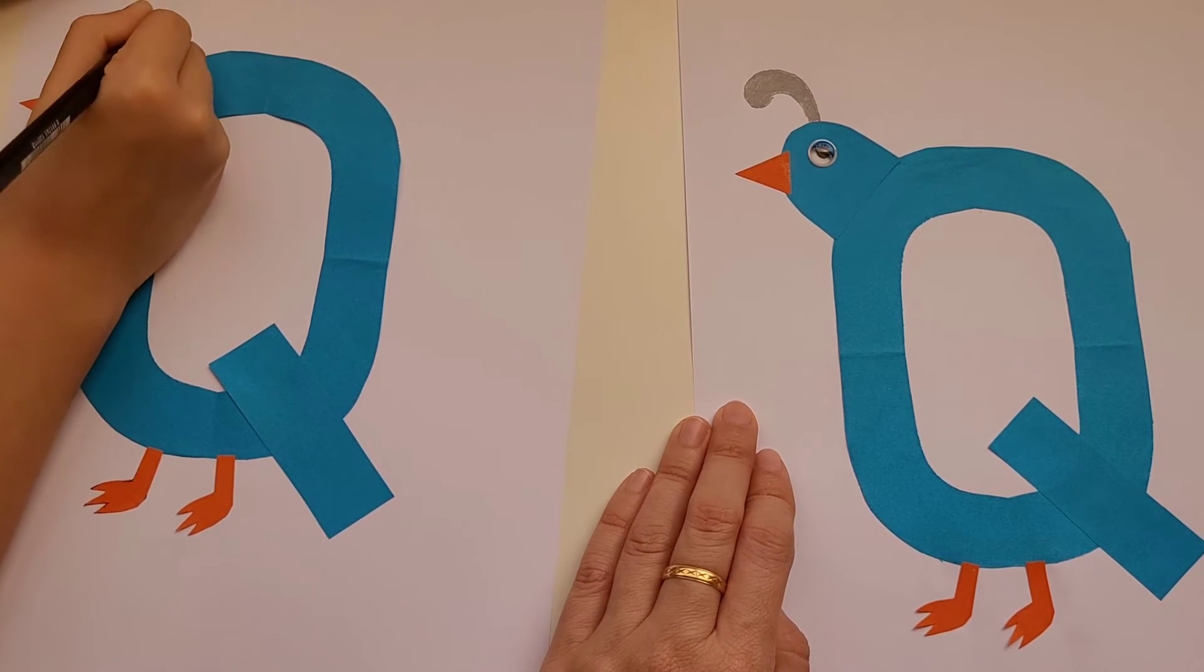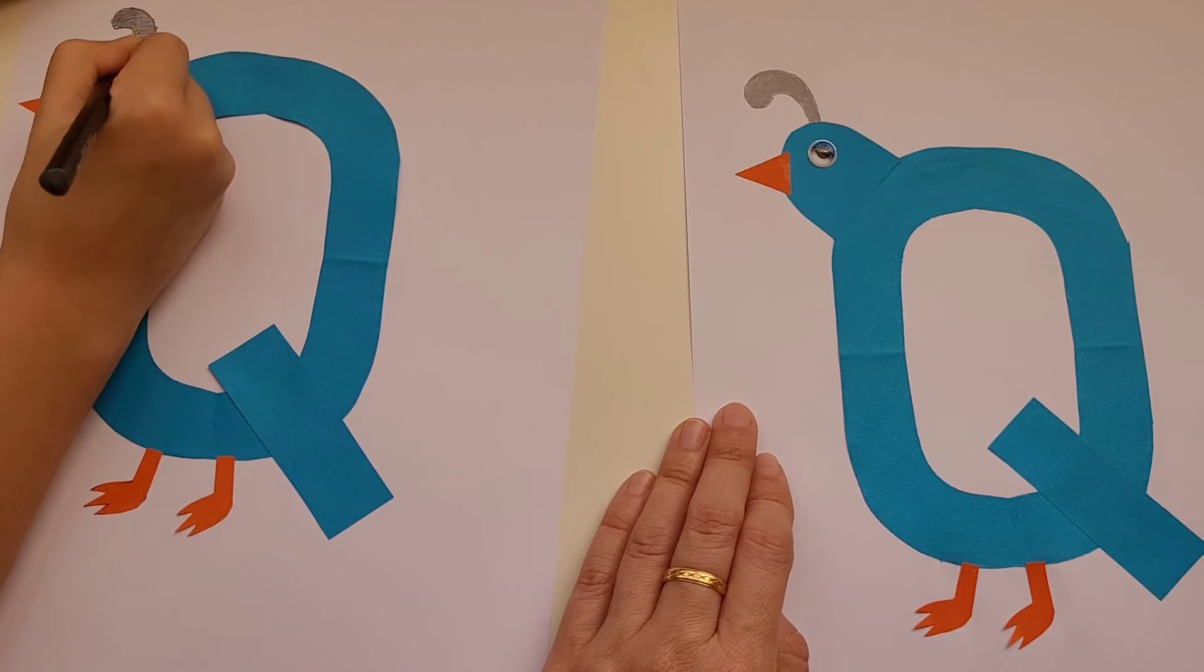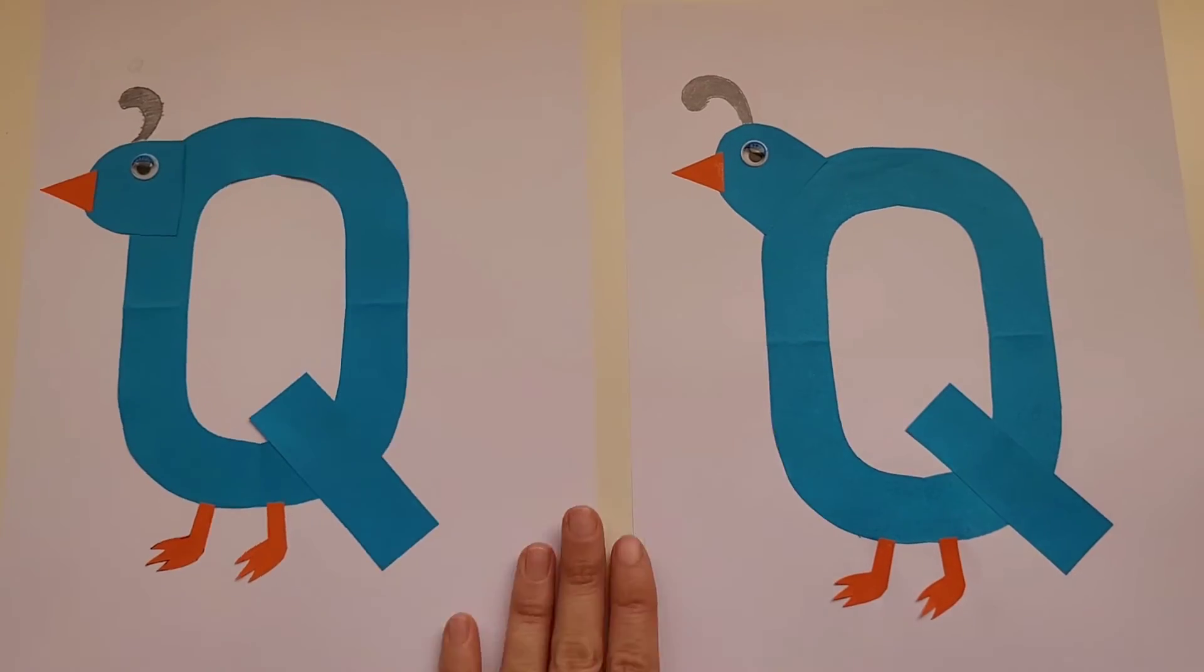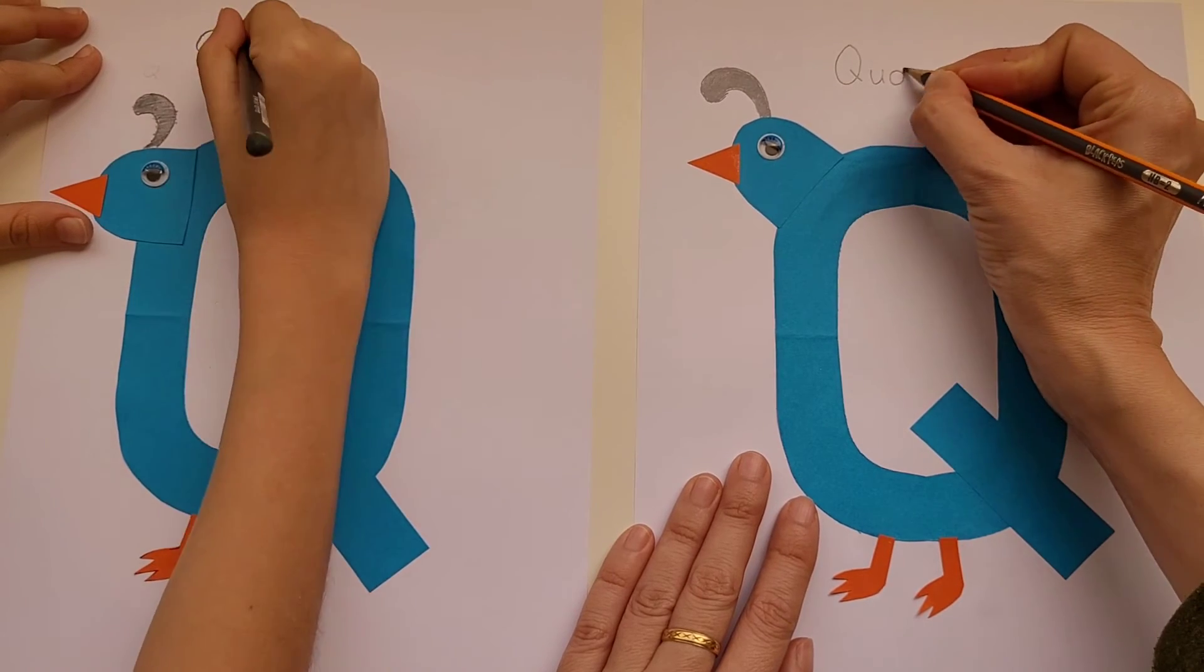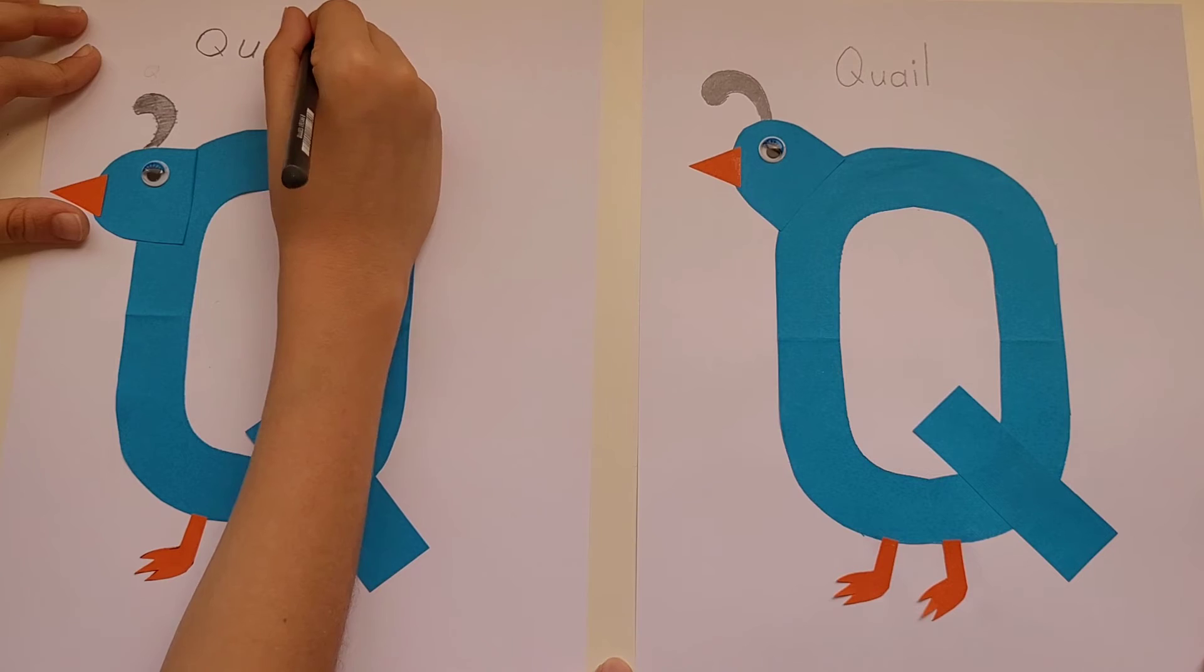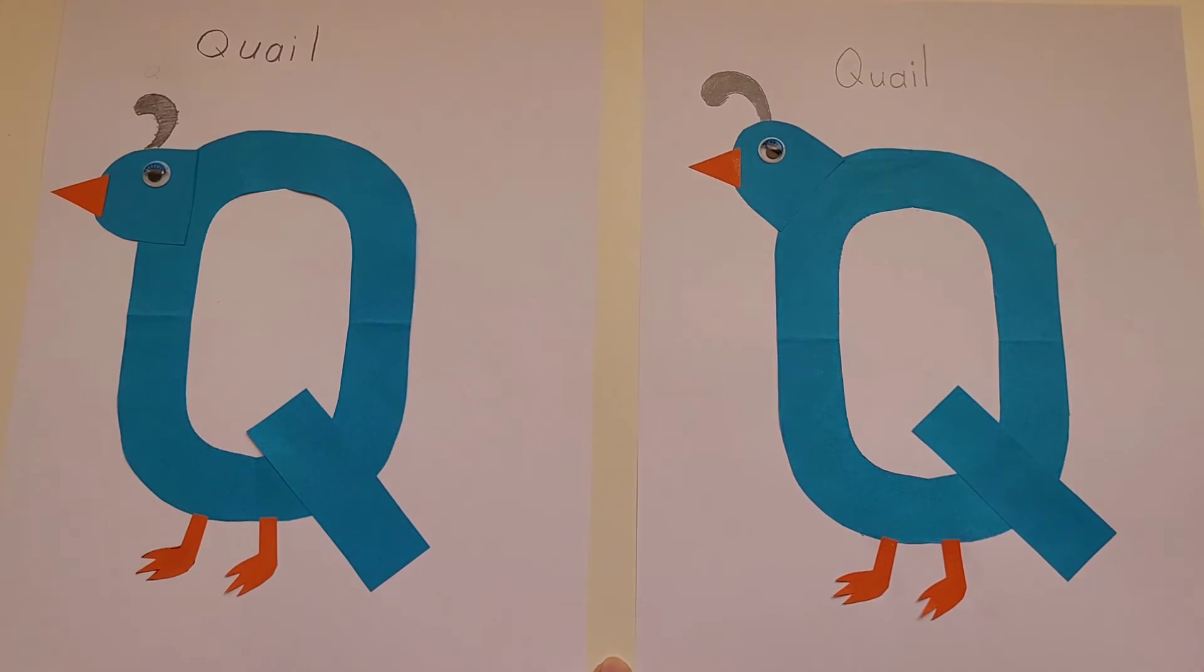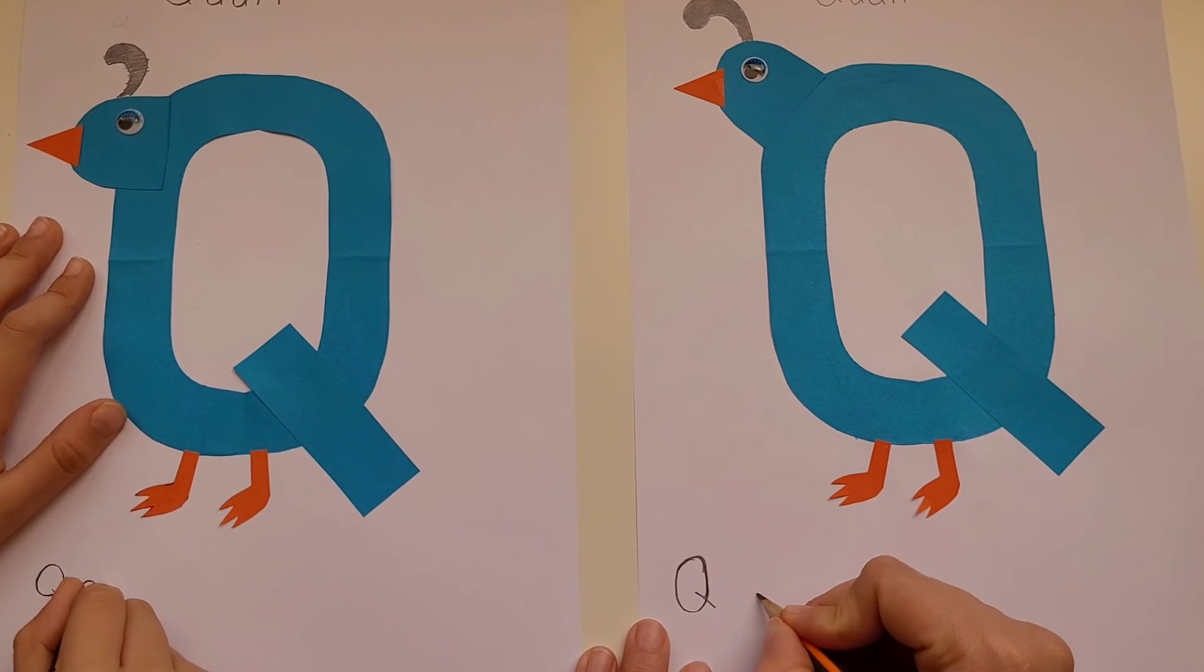Then we're going to draw the top of the quail. After that, we're going to write the word quail. Do you know how to spell quail? Yes, I do. Q-U-A-I-L. Good job. We're going to write the word quail on top and then we're going to practice writing the uppercase and lowercase Q.